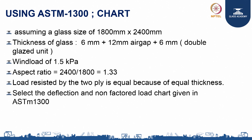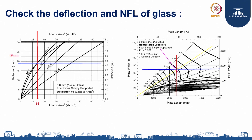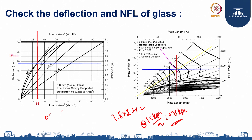The aspect ratio is the bigger side divided by the smaller side, which equals 1.33. The load resisted by the two plies — the 6 and 6 mm — will be equal because of equal thickness. The non-factored load chart for 6 mm glass can be selected. The area is 1.8 × 2.4, and the load shared by each glass ply is 1.5 kPa divided by 2, which equals 0.75 kPa. The value of 0.75 × (1.8 × 2.4)² gives approximately 14.